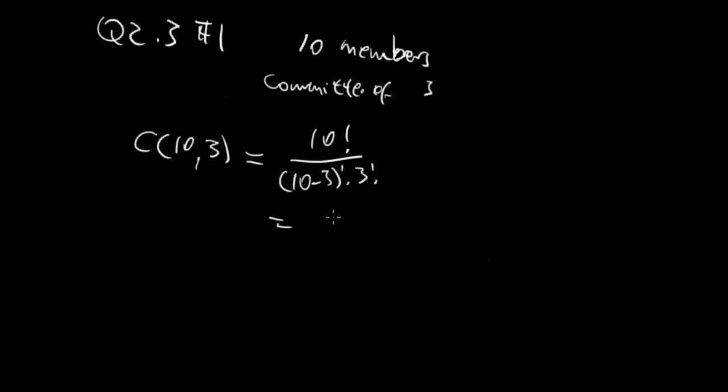And then if you expand that out, you have 10, 9, 8, 7, 6, 5, 4, 3, 2, 1 on top. And then you have 7, 6, this is 7 factorial, so 7, 6, 5, 4, 3, 2, 1. And then here you have 3, 2, 1.